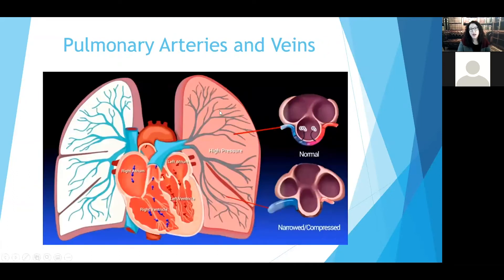Here's an example of someone who has high blood pressure in the lungs. These blood vessels are really narrowed. Normally blood flows easily through this circuit and exchanges oxygen and carbon dioxide in the small air sacs in the lungs. But in someone who has pulmonary arterial hypertension or other forms of pulmonary hypertension, these blood vessels may be narrowed, causing pressure to back up in the right heart. The once-normal right ventricle has gotten thicker and bigger, and it's not working as well.